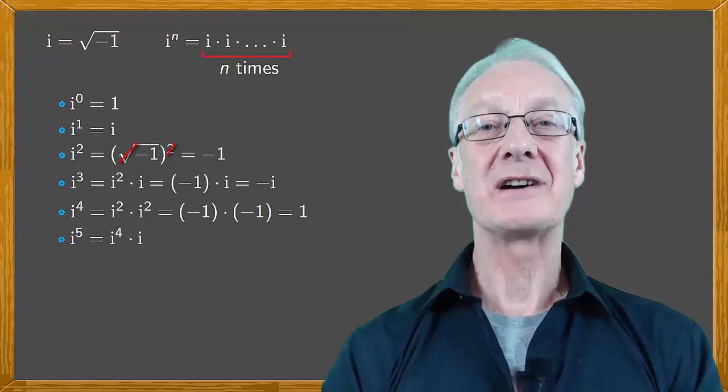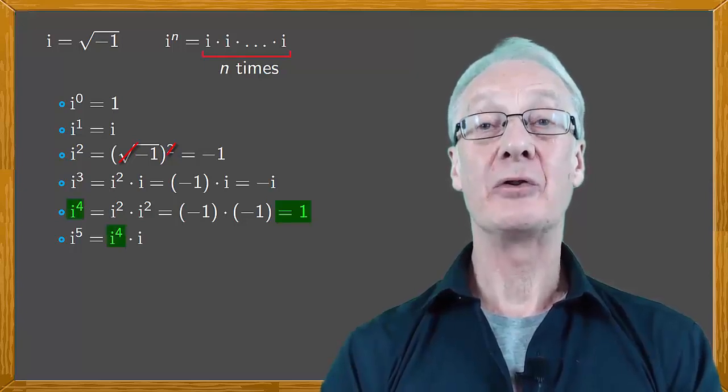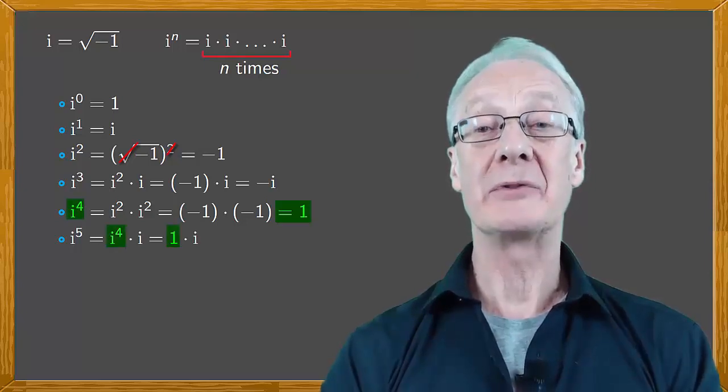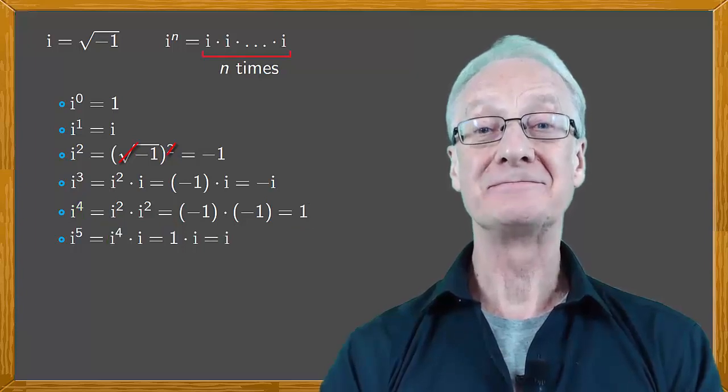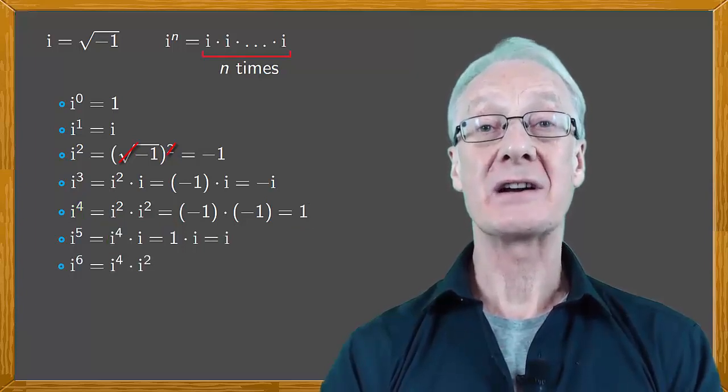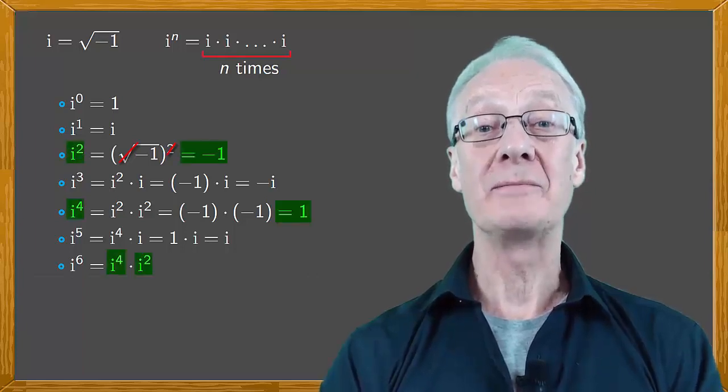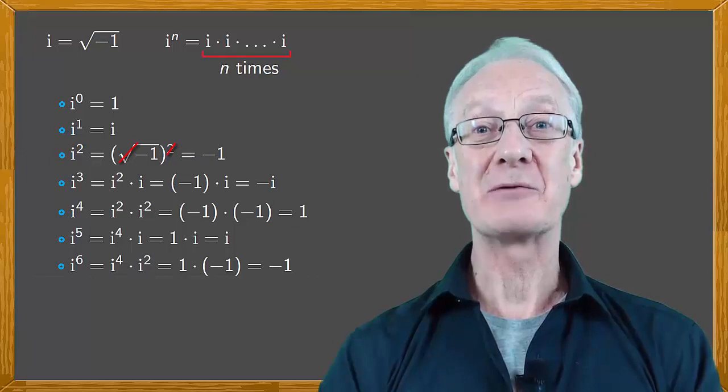i to the five is i to the four times i, and since i to the four is one, this is one times i, which is i. And in the same way, i to the six is i to the four times i squared, and since i squared is minus one, this is one times minus one, which is minus one.